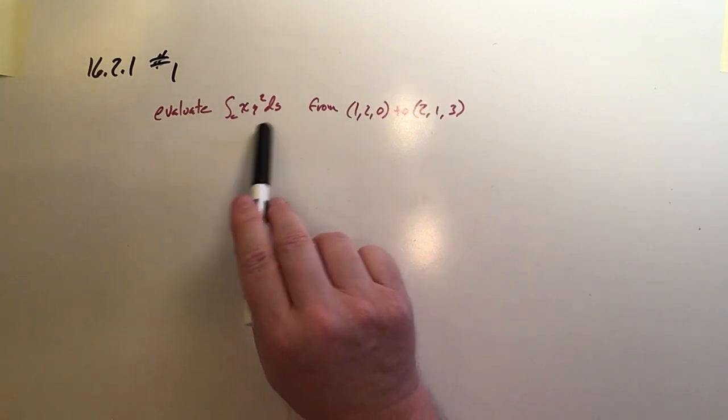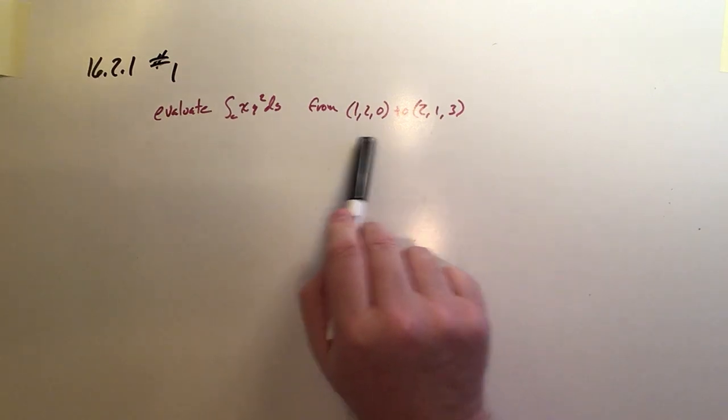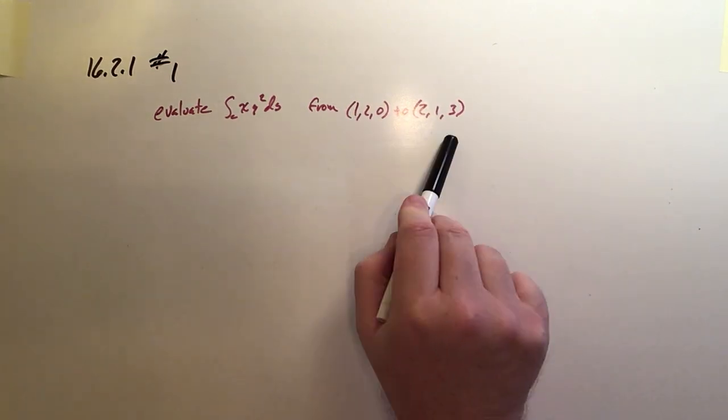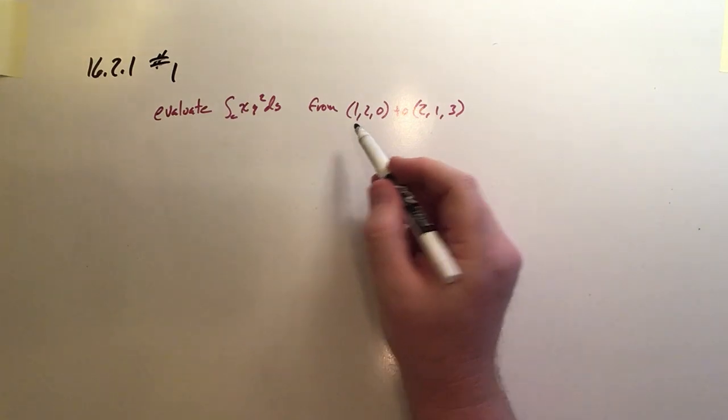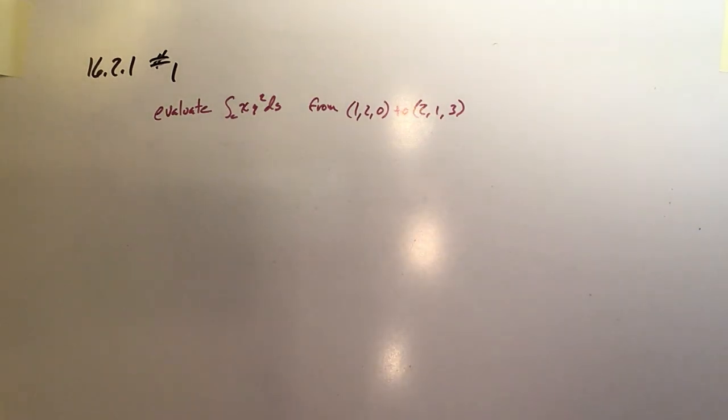So what I want to do is parameterize the DS by turning it into a position vector. So let's do that. This one's just a straight line between (1, 2, 0) and (2, 1, 3).